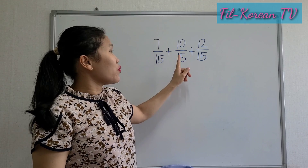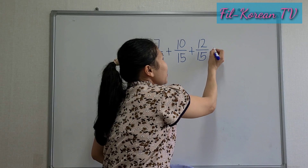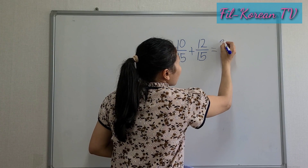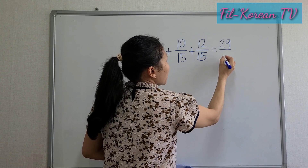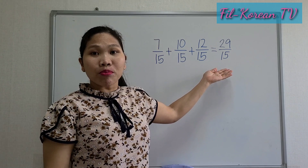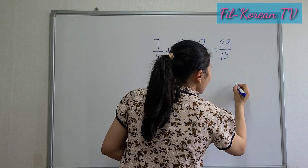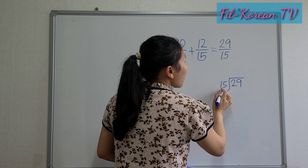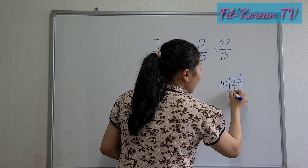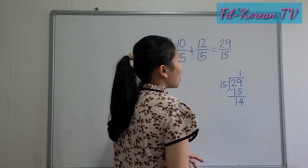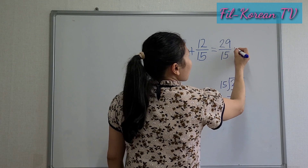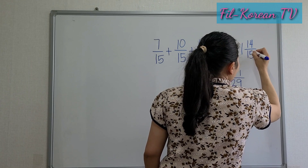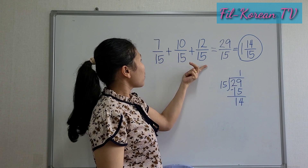Seven-fifteenths plus ten-fifteenths plus twelve-fifteenths. Add the numerators: seven plus ten equals seventeen, plus twelve equals twenty-nine. Copy the common denominator: fifteen. Since it is an improper fraction, we simplify by dividing: twenty-nine divided by fifteen is one; one times fifteen is fifteen; twenty-nine minus fifteen equals fourteen — the remainder is fourteen. So the answer is one and fourteen-fifteenths.